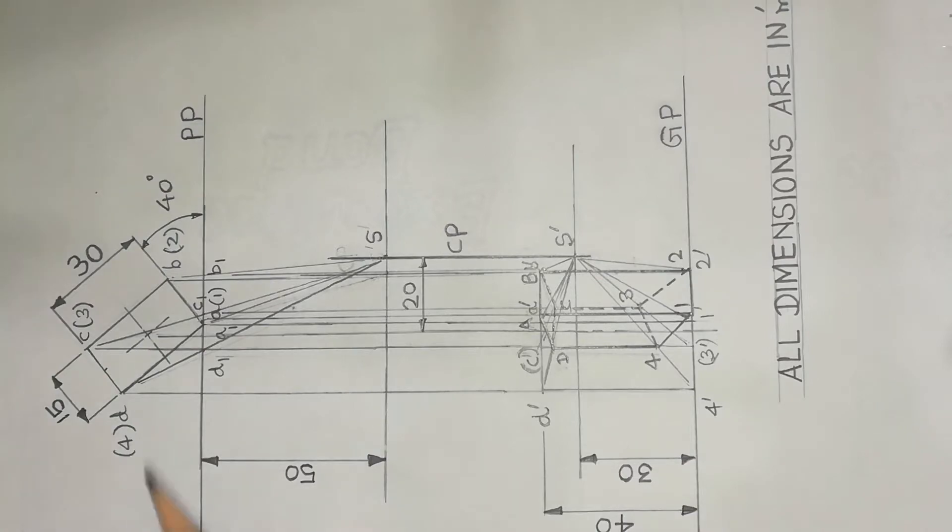The top view is a rectangle. It is 40 degrees inclined to PP. The top corners are marked as A, B, C, D, and the base corners are the same: one, two, three, four. This view is called the top view.